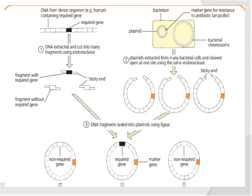We'll do a quick recap of your N5 work on genetic engineering. The idea is you've got a gene producing a useful product - in this example, a human chromosome with a gene on it. That gene gets extracted from the chromosome using an endonuclease, which is the enzyme used to cut the gene out. We end up with the gene that we want, and you'll notice something called sticky ends.